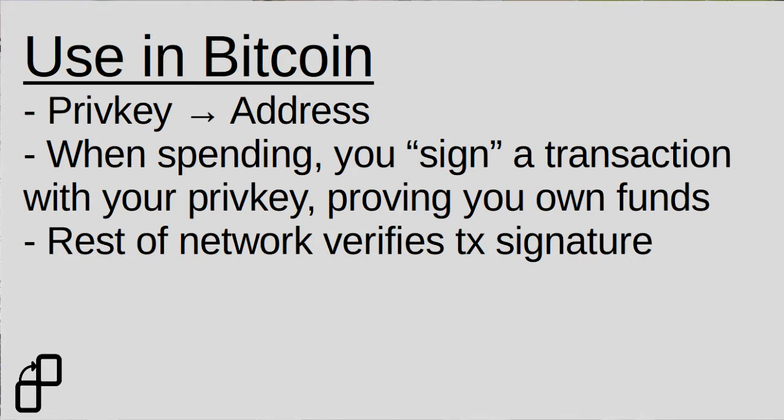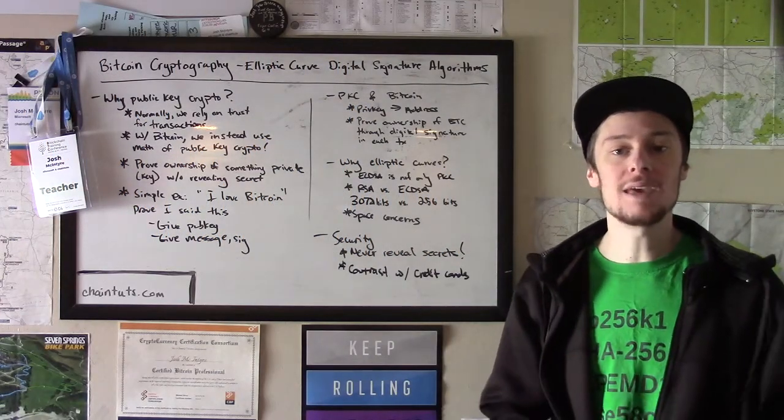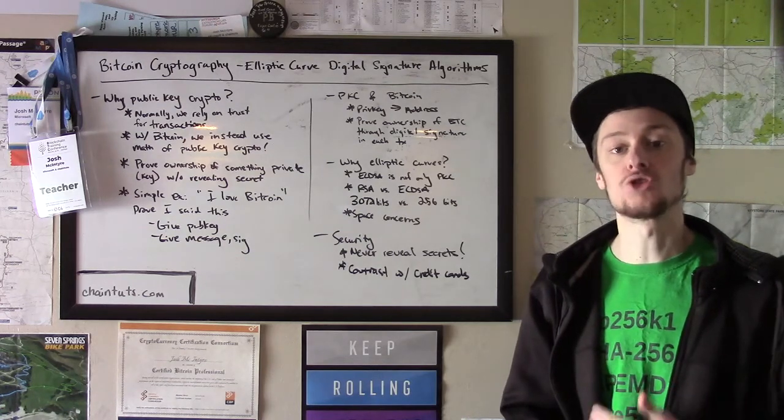So if you wanted to send me some Bitcoin, I would give you my public address, which is a form of an encoded public key. And now in the Bitcoin system, when you send that transaction to me, I now own Bitcoin at that address. And what that means is my private key controls that Bitcoin.